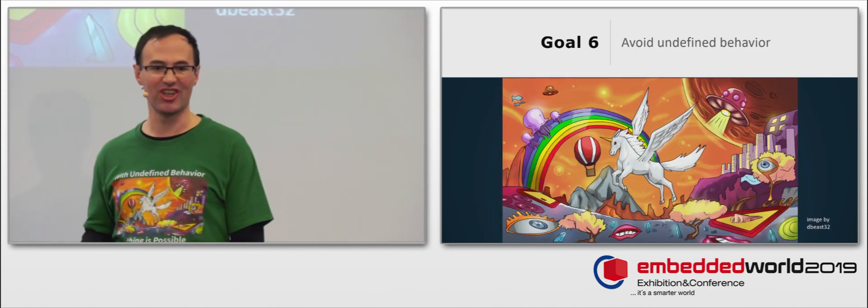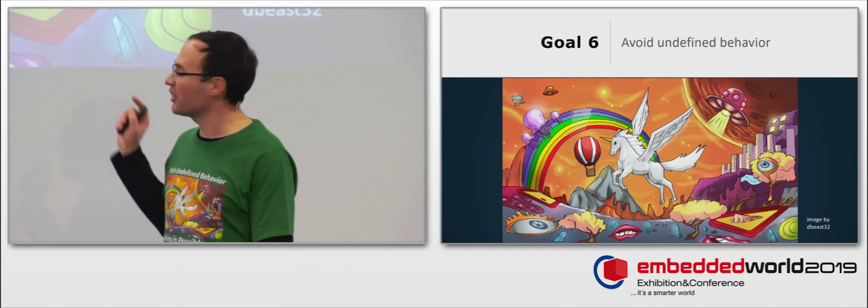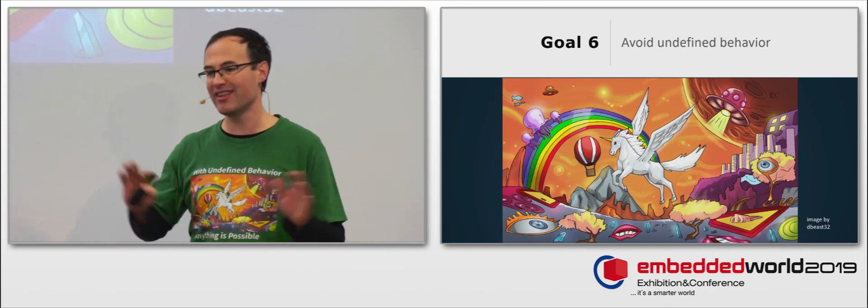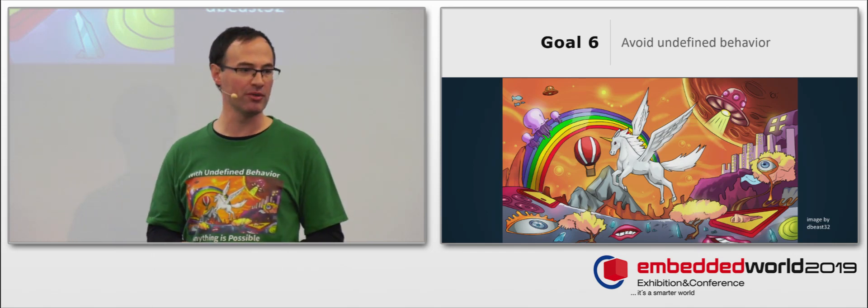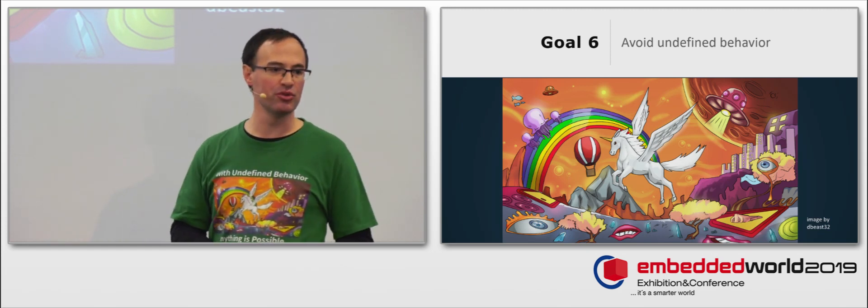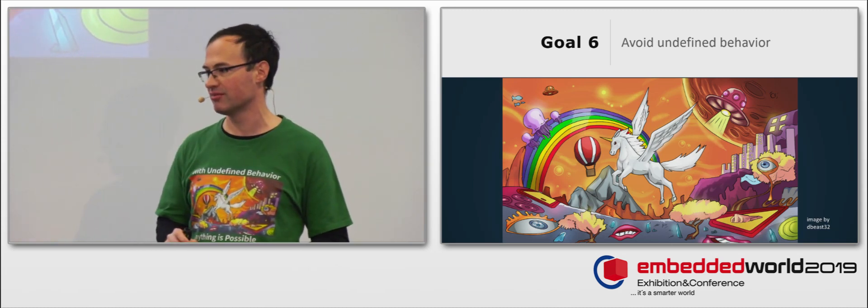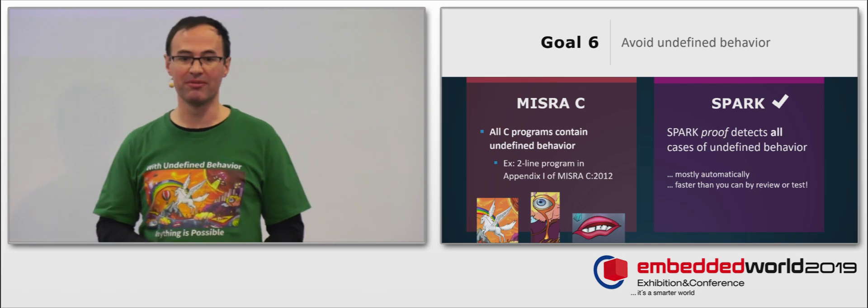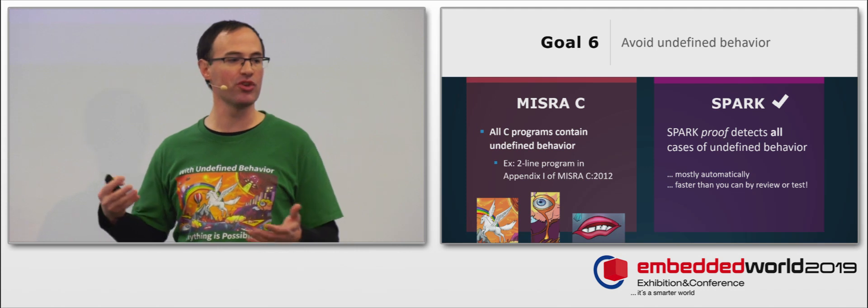Now, let's look at the undefined behavior problem, the plague of C programs. This picture depicts the world of your C program after an undefined behavior. Anything is possible. In particular, because the compiler will exploit the undefined behavior in your program to optimize your code. And if you don't believe me, I encourage you to look at the online blog post by Rafal Levin called With Undefined Behavior Anything is Possible. It has this image and all the details.